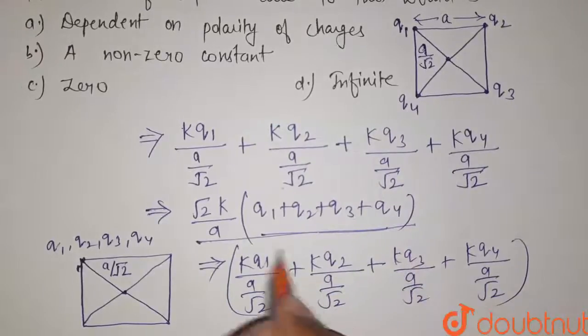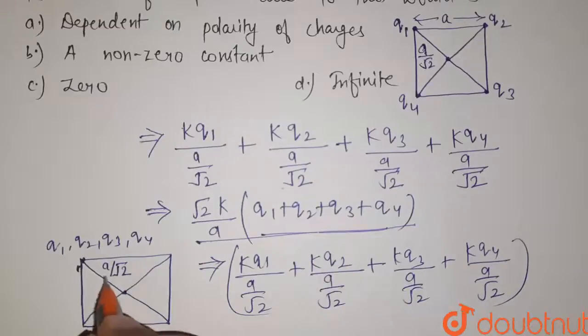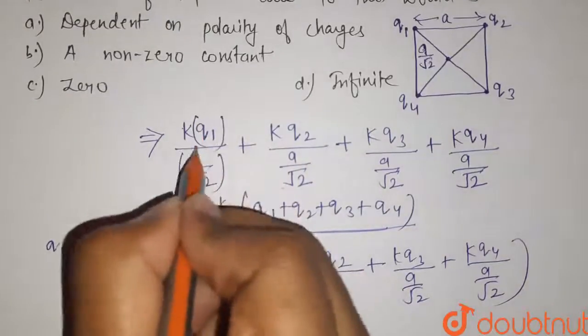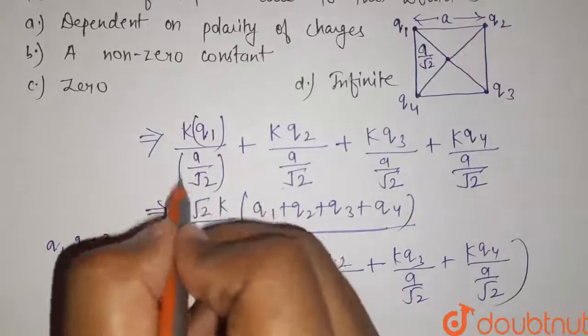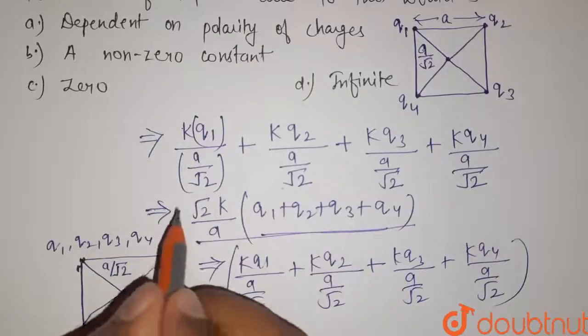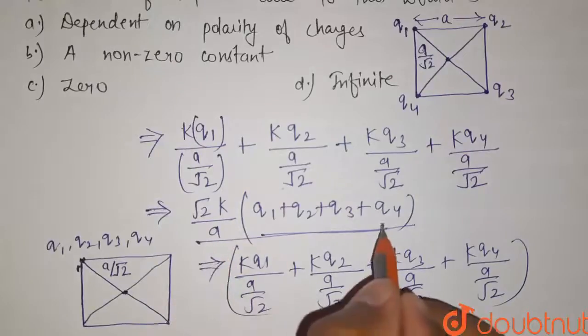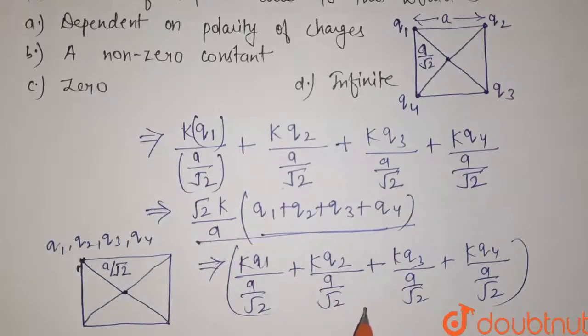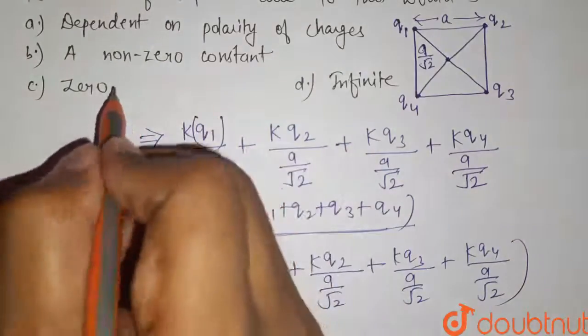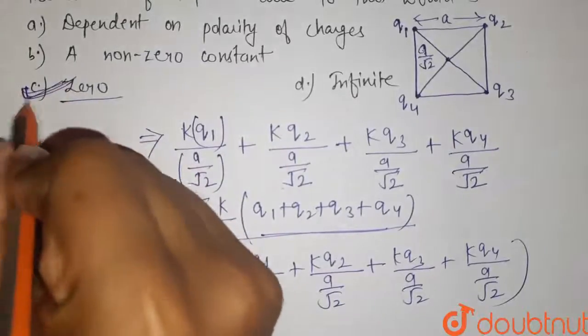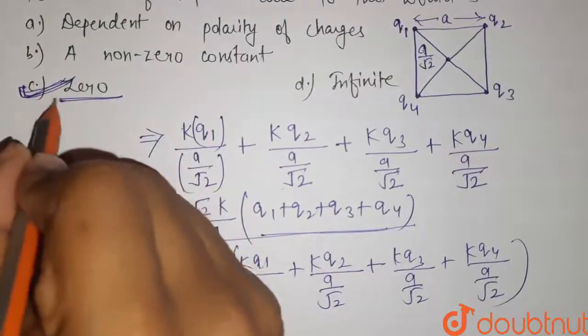So that means there is no change in potential because the potential depends on the distance and the charge. The charge and the distance in both the cases are equal. That is why the potential in the first case is equals to the potential in the second case. So we can say that the change in potential is equals to zero. Therefore, the correct answer for this is option C that is zero.